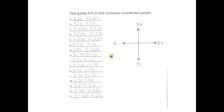Here are the answers to the previous slide, A through P. Notice we have the axis symbol to the right showing the direction for x positive, x negative, y positive, and y negative.